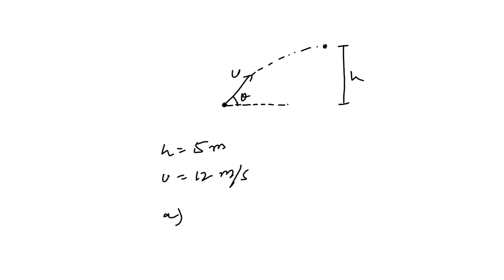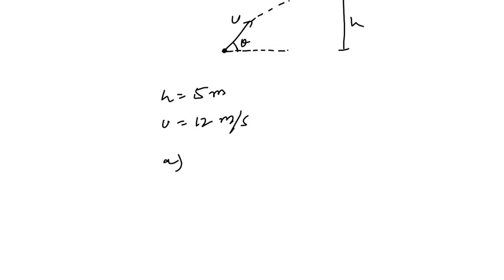Now here you can simply apply the expression of the maximum height that is reached by the projectile: h equals u squared sine squared theta divided by 2g.